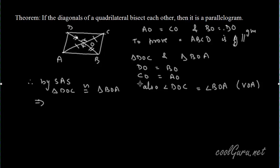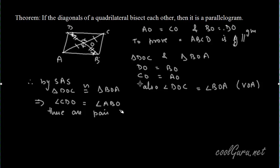Since the two triangles are congruent, by CPCT we can say angle CDO is equal to angle OBA. These two angles are equal, and they are a pair of alternate angles. We know that if alternate angles are equal then the lines are parallel, so it follows that line CD is parallel to AB.